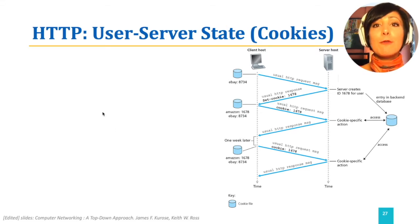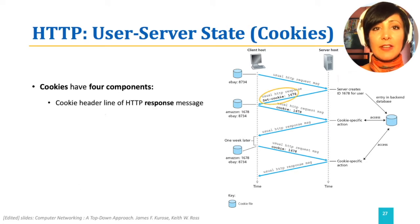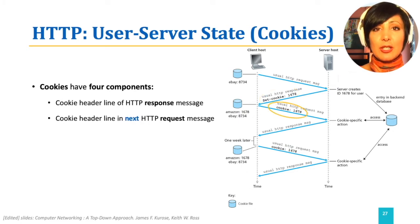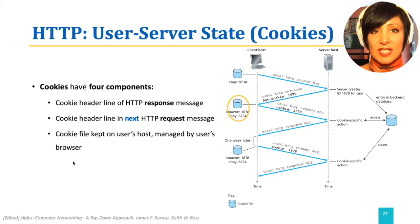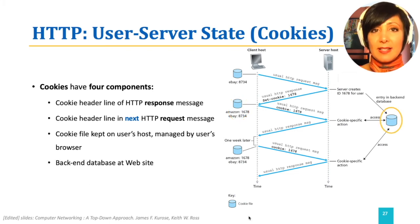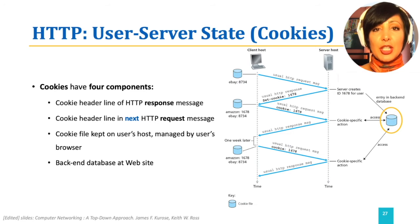Cookies have four components. First, a cookie header line in the HTTP response message, which sets a unique cookie ID value to the user. Second, a cookie header line in the next HTTP request message, which includes the same cookie ID. Third, a cookie file kept on the user's system and managed by the user's browser, which associates the user-side information for the cookie. And fourth, a backend database at the website, which stores the user information at the server side and associates it to the cookie on the communication with the client.